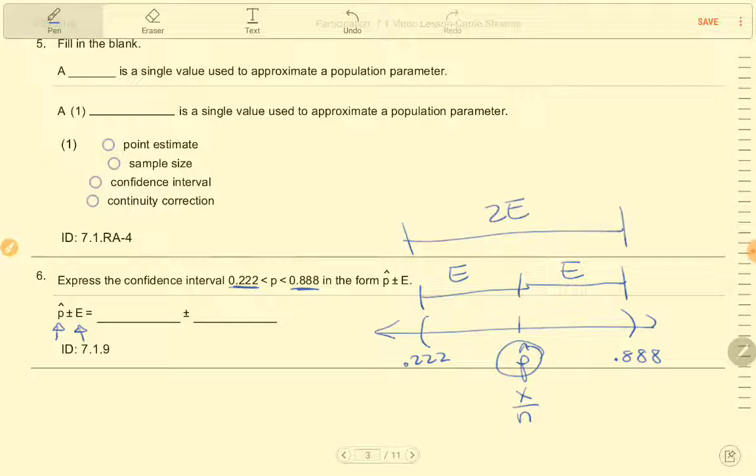So if I just take the distance between those two values and divide it in half I'll have the margin of error, and if I do the average of the two points that'll be my midpoint p hat.